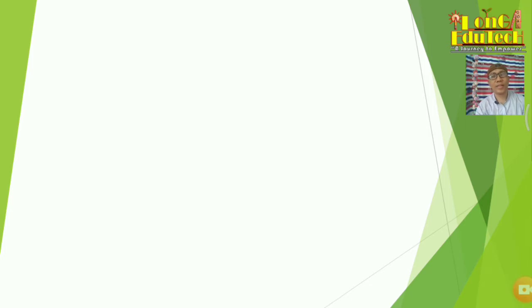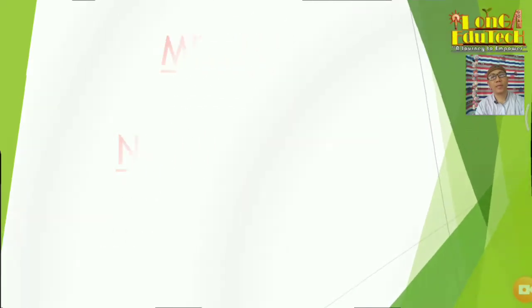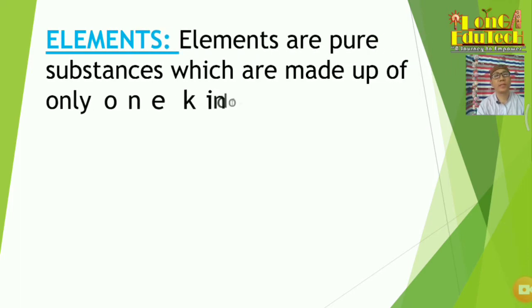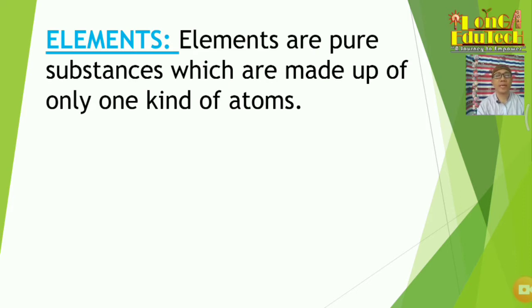Hello students, welcome to Longage Tech. Today's video covers class 8 chapter 4 in chemistry, that is metals and non-metals. Before going to metals, we have to know about elements. Elements are pure substances made up of only one kind of atom. There are 108 elements described by scientists so far, 92 of which are naturally occurring, and the rest are prepared in the laboratory.